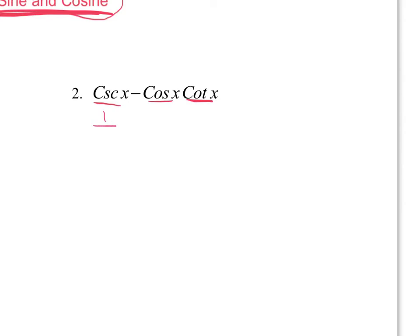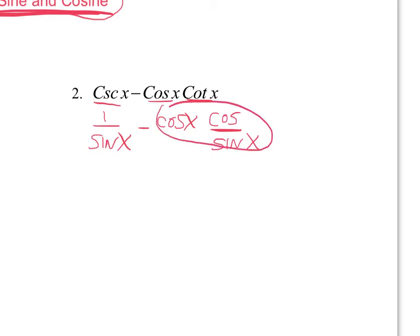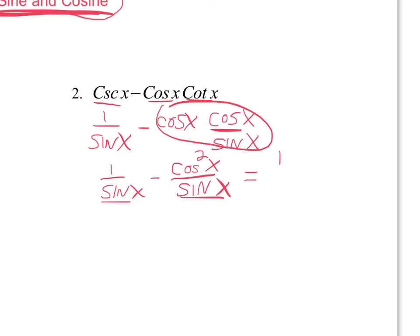Cosecant is one over sine of x. Cosine I just leave the same. And cotangent is cosine over sine of x. If I multiply these, it's going to give me cosine squared of x over sine of x. So we have one over sine of x minus cosine squared of x over sine of x. The good thing about doing this and putting it in terms of sine and cosine is that I have the same denominator — sine — so I can combine this into one fraction: one minus cosine squared of x over sine of x.